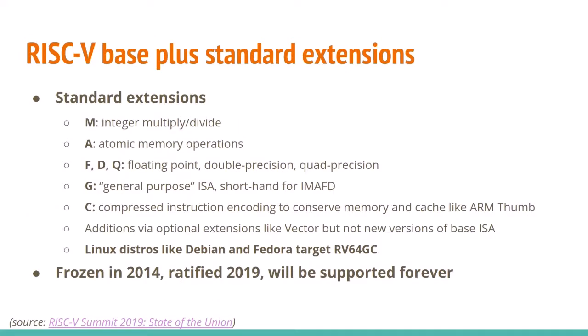The RISC-V base gets augmented by standard extensions. M is for multiply/divide, A for atomic operations (useful in multiprocessor systems), and F, D, Q for different precisions of floating point. G is shorthand for general purpose — integer, multiply, atomic, float, and double precision float. C is for compressed instruction encoding, which helps conserve memory and cache, similar to ARM Thumb. Additional extensions like vector processing are being worked on, but won't require a new base version of the ISA. Linux distros like Debian and Fedora are targeting specifically RV64GC.